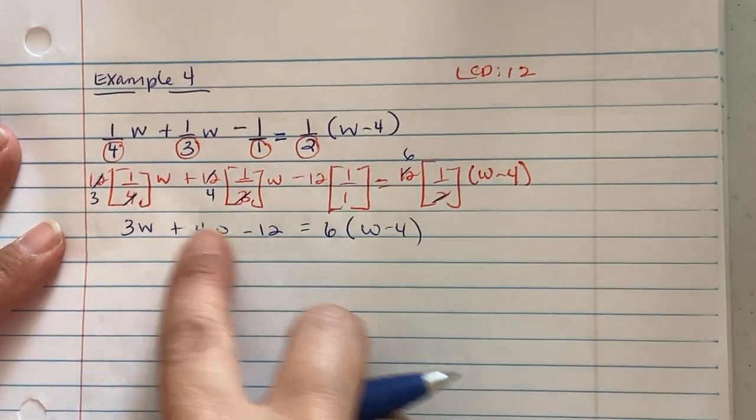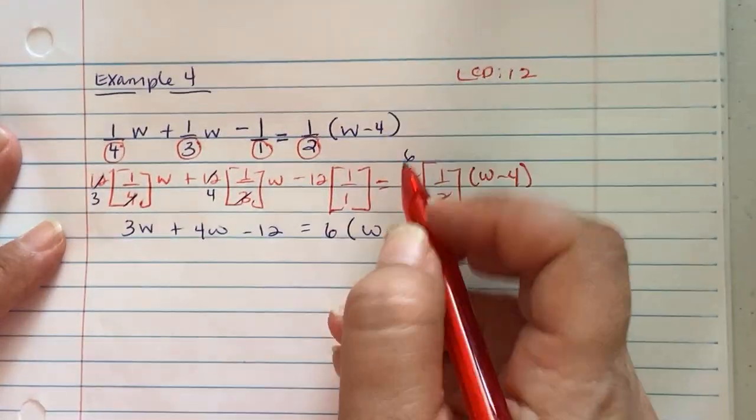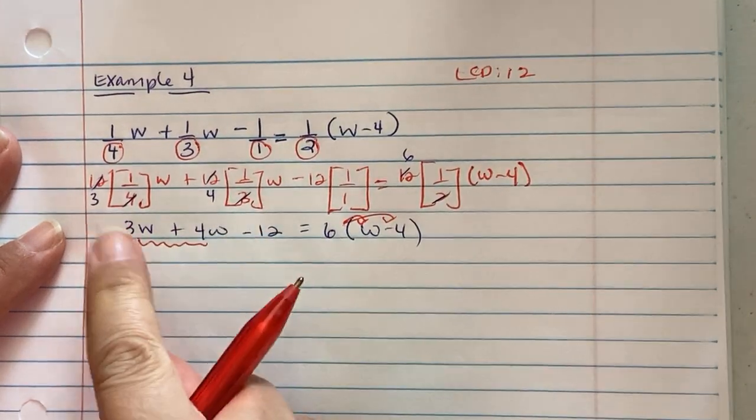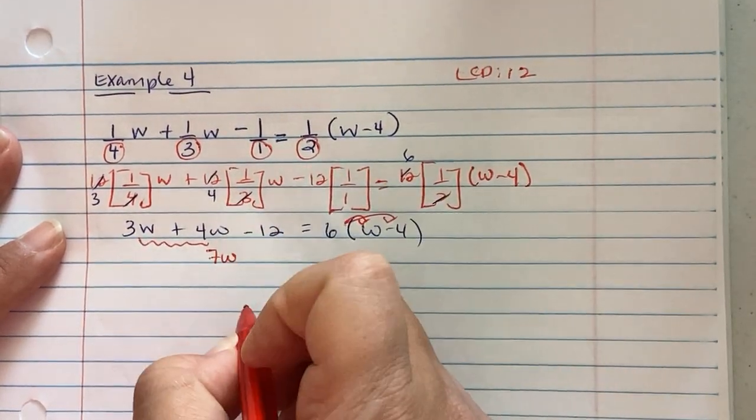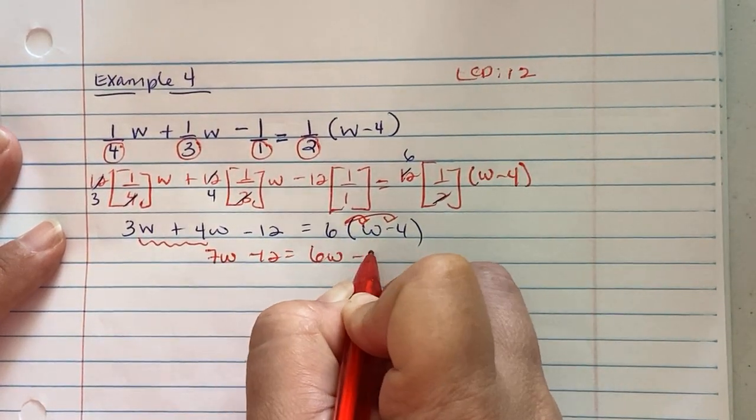On the left side we can combine like terms. On the right we need to distribute. So we're distributing on the right and on the left combining. So we have 3 and 4, they're the same terms, so 7w minus 12. We distribute, we get 6w minus 24.